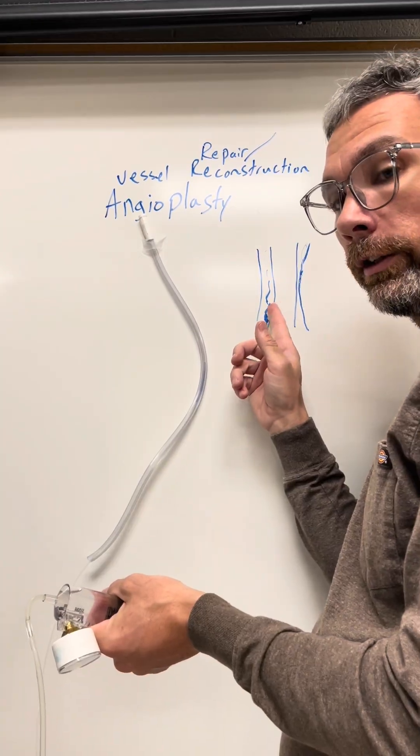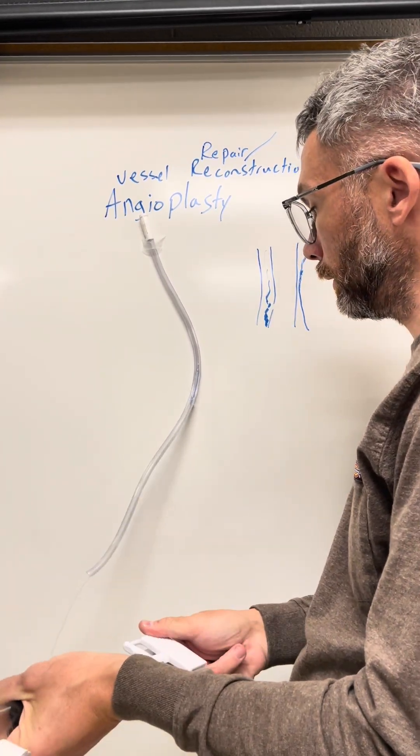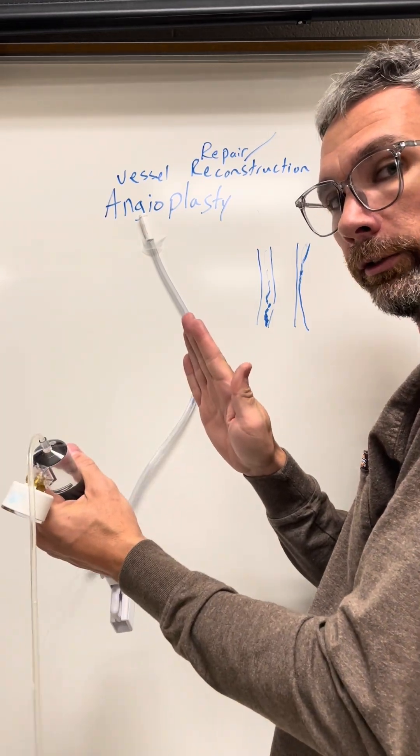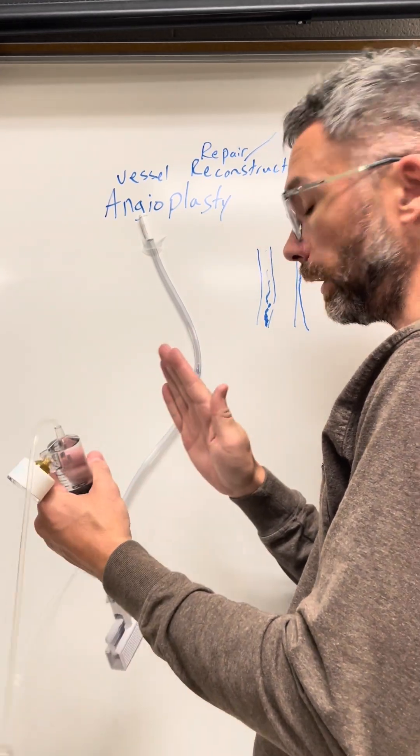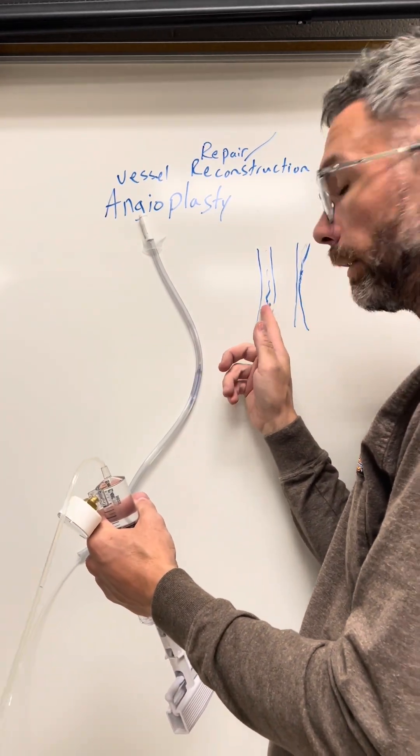In this stricture down area, as you blow it up, it's going to expand that and dilate it. And then you leave it and it presses against those walls. It expands them, it presses against them and you leave it there and it dilates that area. So you want this area to look more like this when you're done.